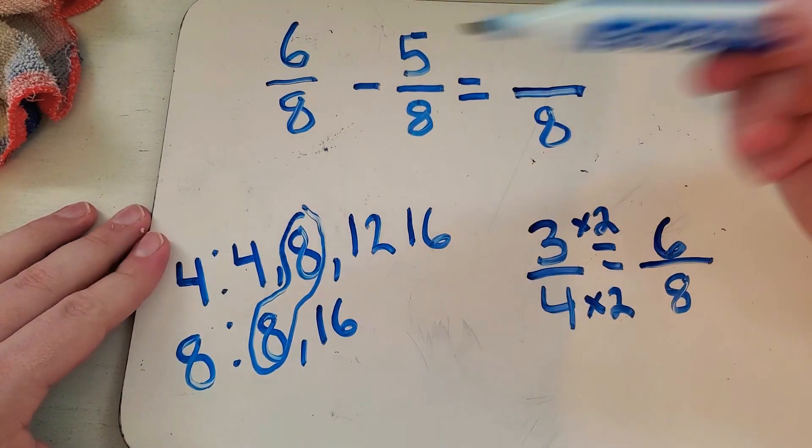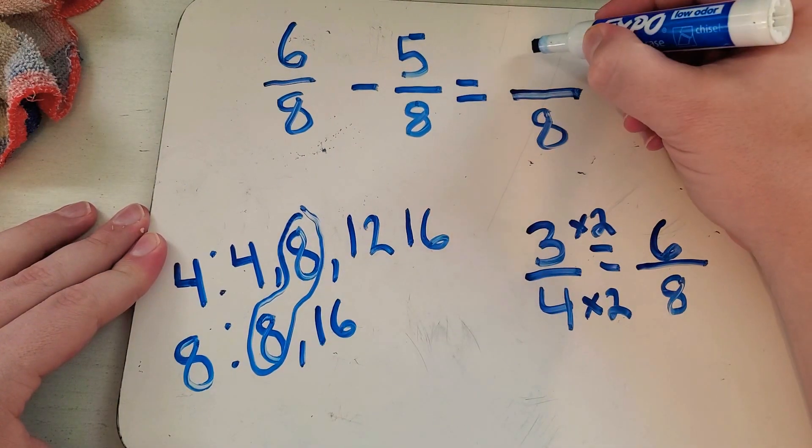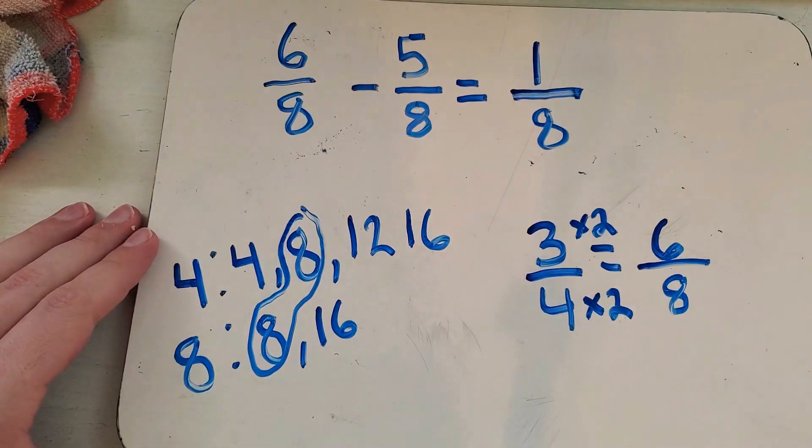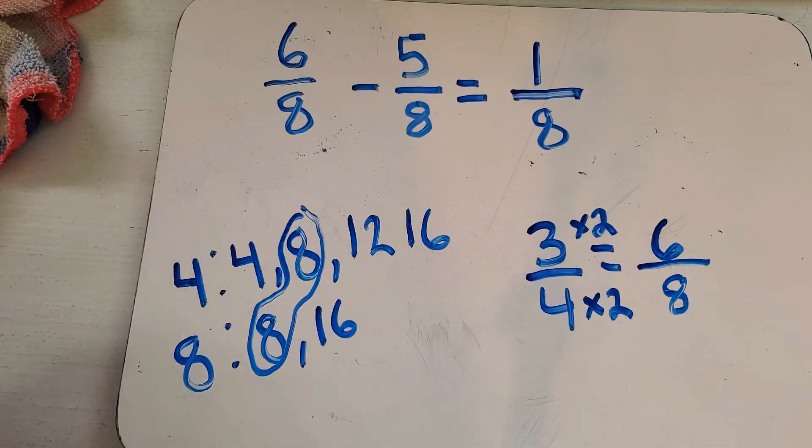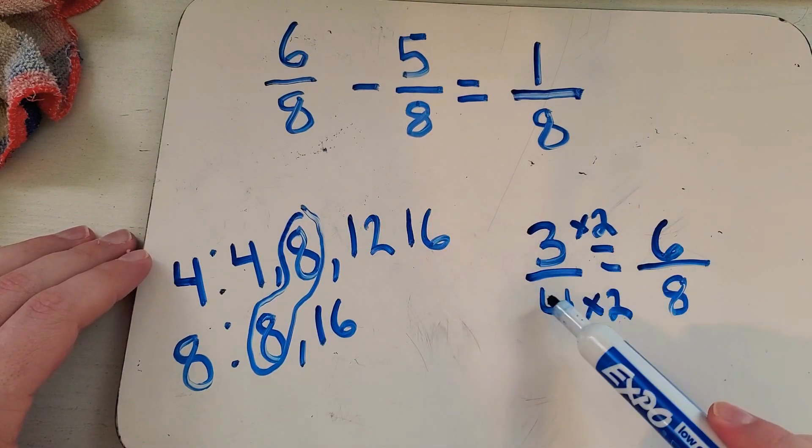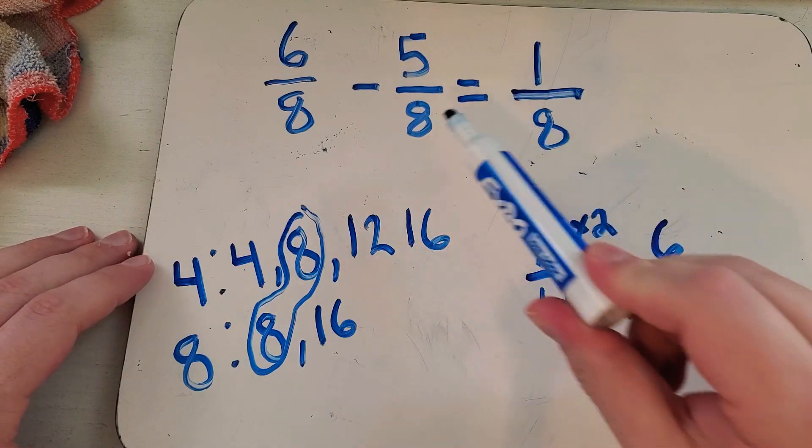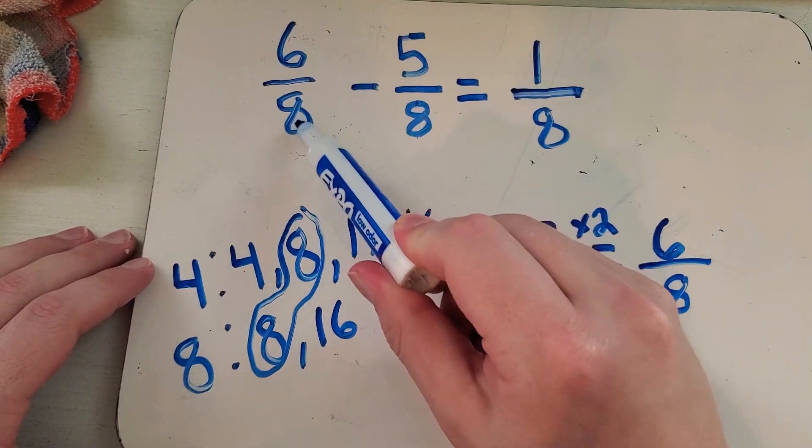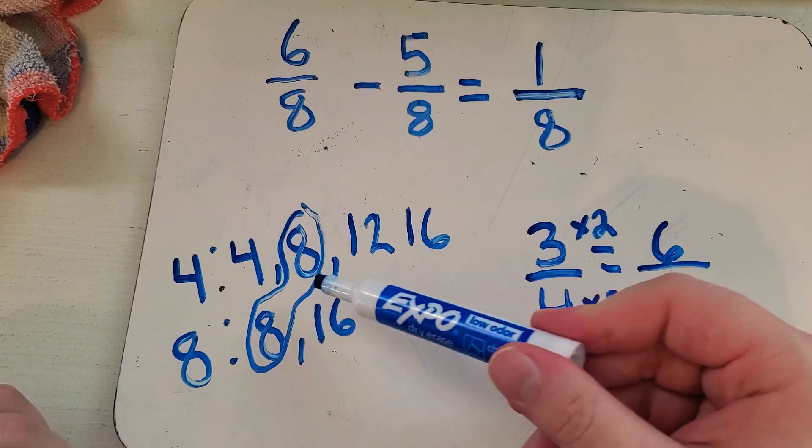So you can go ahead and leave that as eight, and you just subtract the numerator. So you just say six minus five is one. So three fourths minus five eighths equals one eighth. All I did was change three fourths to six eighths.